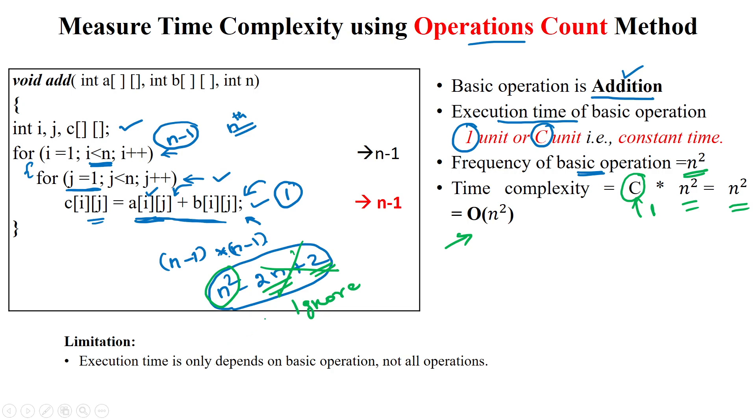As per the operations count method here, which is not considering other portions of the operations, that is one of the limitations in the operations count because it is considering only the basic operations in the written algorithm. Thanks for watching.